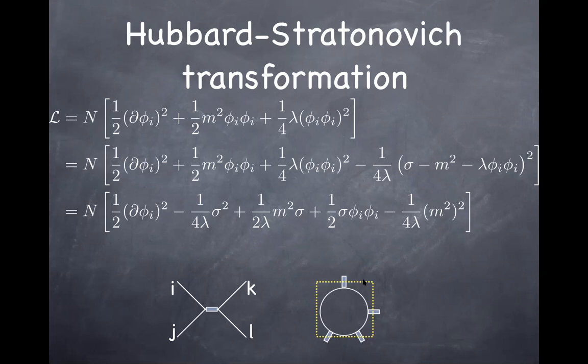Regarding the linear term in sigma: yes, it does affect things. When we integrate over sigma, we keep this term in the 1PI effective action. Since m² corresponds to T − Tc, we rely on this linear term in sigma when studying how physical observables depend on T − Tc to extract critical exponents.